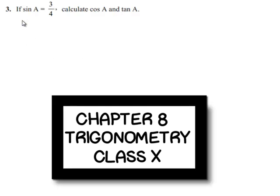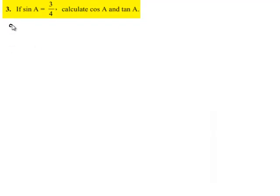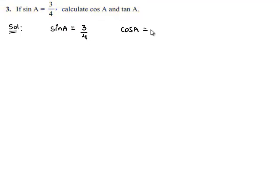Moving on to the third sum: if sinA is equal to 3 by 4, calculate cosA and tanA. Now moving on to the solution. He has given the value of sinA, i.e., 3 by 4, and asks us to find the value of cosA and the value of tanA.